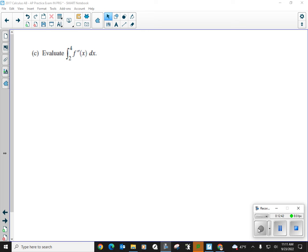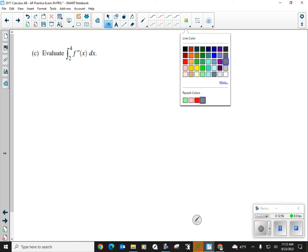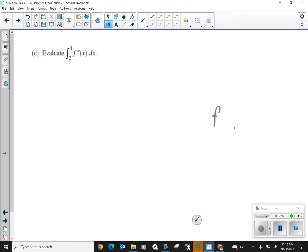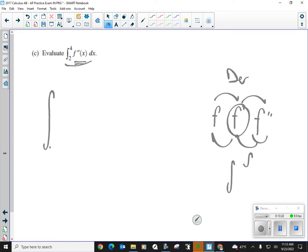Evaluate the integral from 2 to 4 of f double prime of x dx. All right, much simpler. Again, I am going to state that you have f, f prime, and f double prime. These are the derivatives. They're one derivative away. These are the integrals, okay? One integral of f double prime will get you f prime.